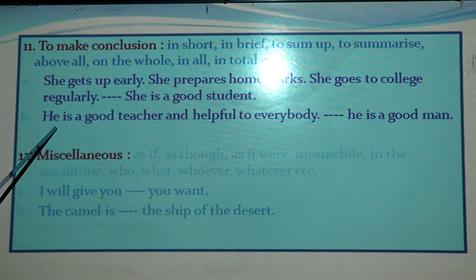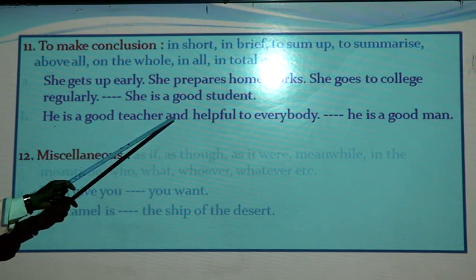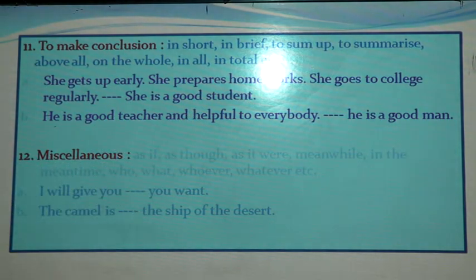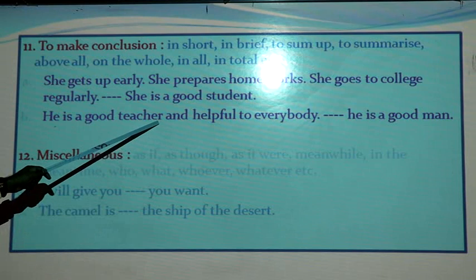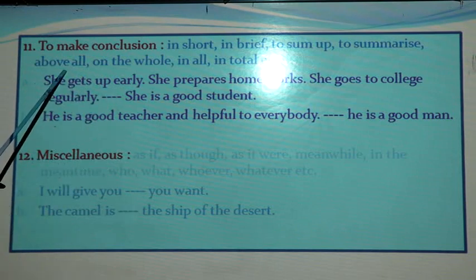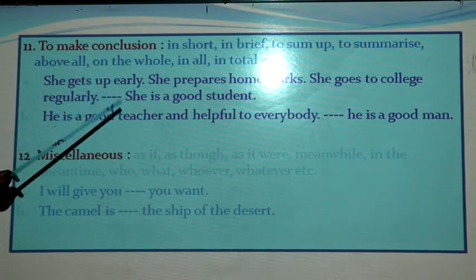Number B: 'He is a good teacher and helpful to everybody. He is a good man.' He is a good teacher — one quality; helpful to everybody — another quality; and the last quality: he is a good man. So in the gap we can use 'above all': 'Above all, he is a good man.' In this rule, we know that in case of concluding the sentence or making the idea end, we use sentence connectors in the last sentence.